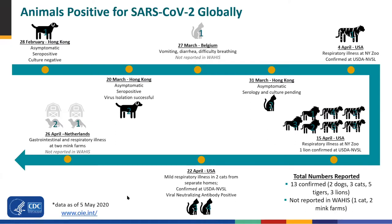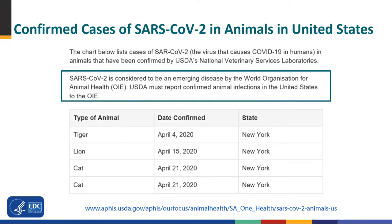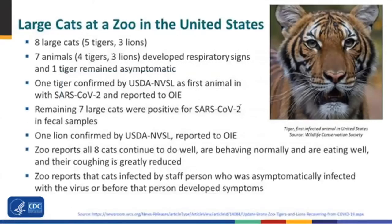The next slide covers confirmed cases of SARS-CoV-2 in animals in the United States in more detail. It's really just in four animals: one tiger and one lion, both at the same zoo, and then two cats. These have been reported to OIE. On the question of what assay methodology USDA is using to confirm animal suspects — I'm sorry, I'm not involved in that aspect.